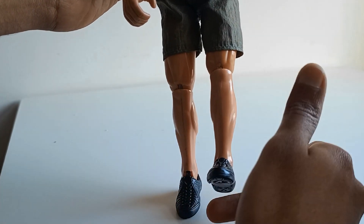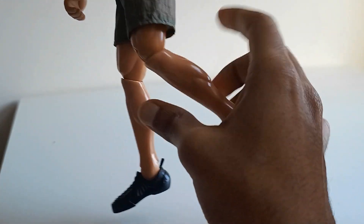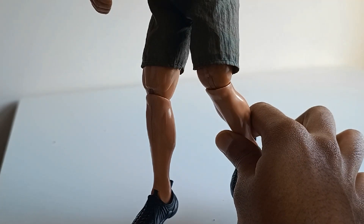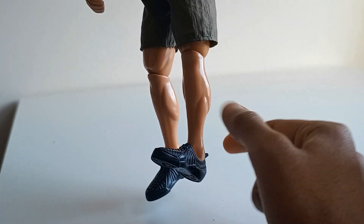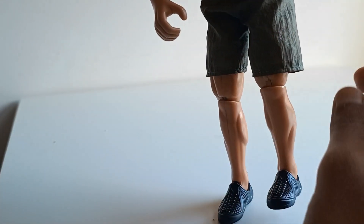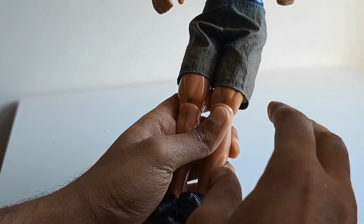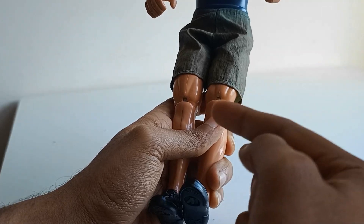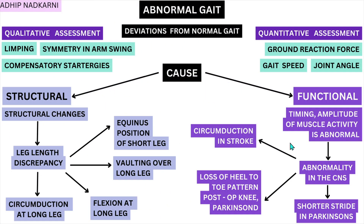Circumduction is also seen in stroke, because of difficulty bending the knee — due to loss of strength, difficulty creating hip flexion, or difficulty achieving dorsiflexion at the ankle. All these reasons can cause the person to adopt a circumductory pattern in their gait. As you can see, different patterns can appear across different conditions, so we need to logically connect the dots and understand what is happening underneath.